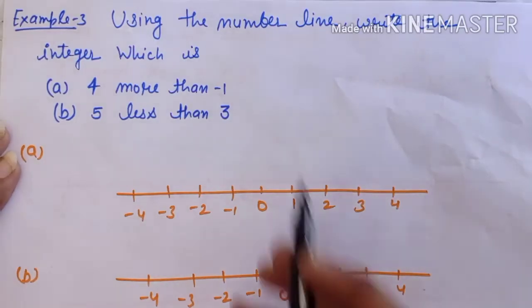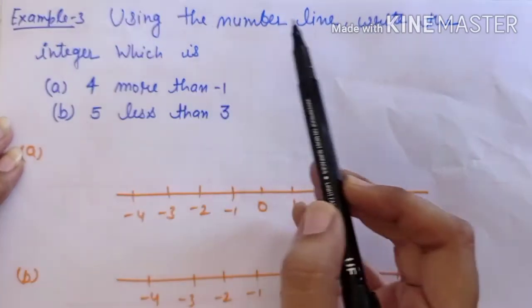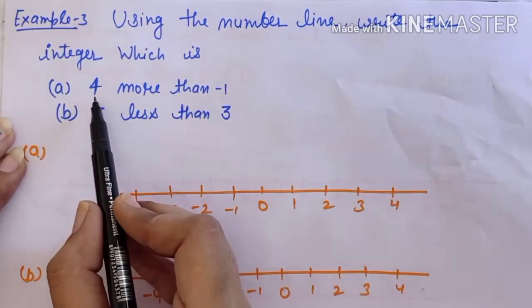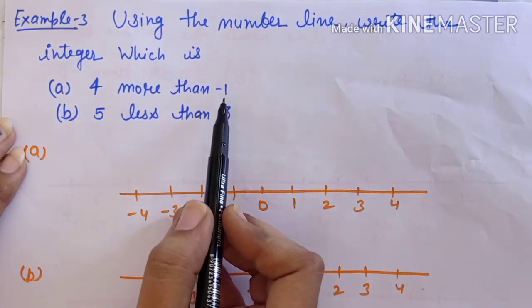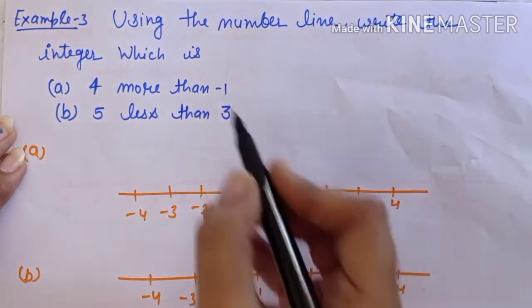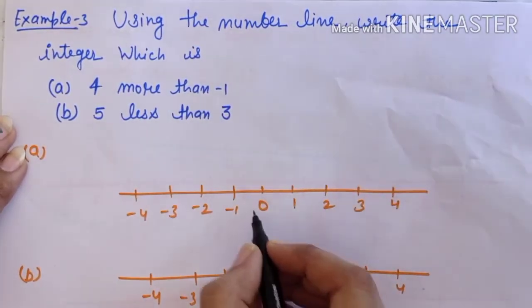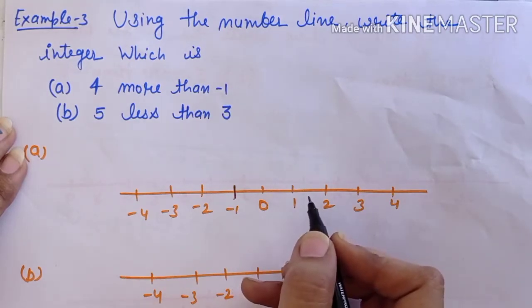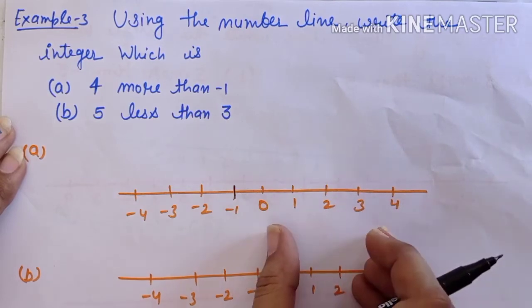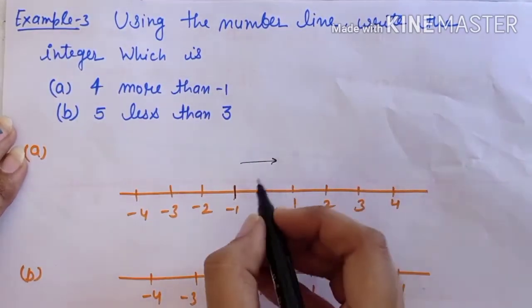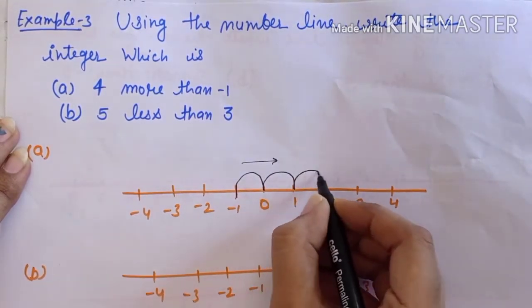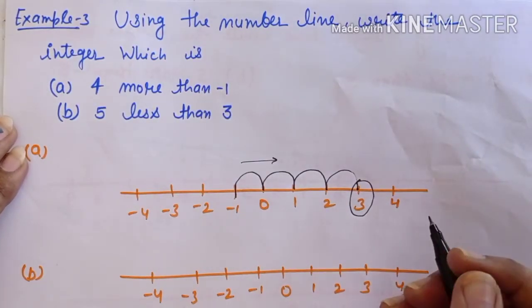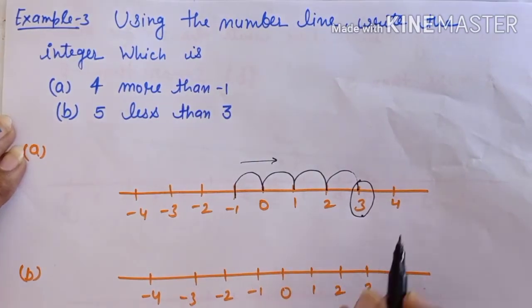Example 3: using the number line, write the integer which is 4 more than minus 1. Firstly, we mark minus 1 on the number line. '4 more than' means we add — so we move right side 4 times: one, two, three, four. Our answer is 3. The integer which is 4 more than minus 1 is 3.